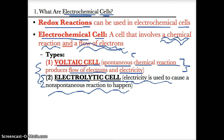Voltaic cells go from chemical energy to electrical energy, whereas electrolytic is the reverse — from electrical to chemical. Just know that voltaic means a spontaneous chemical reaction causes the production of electrons or electricity.